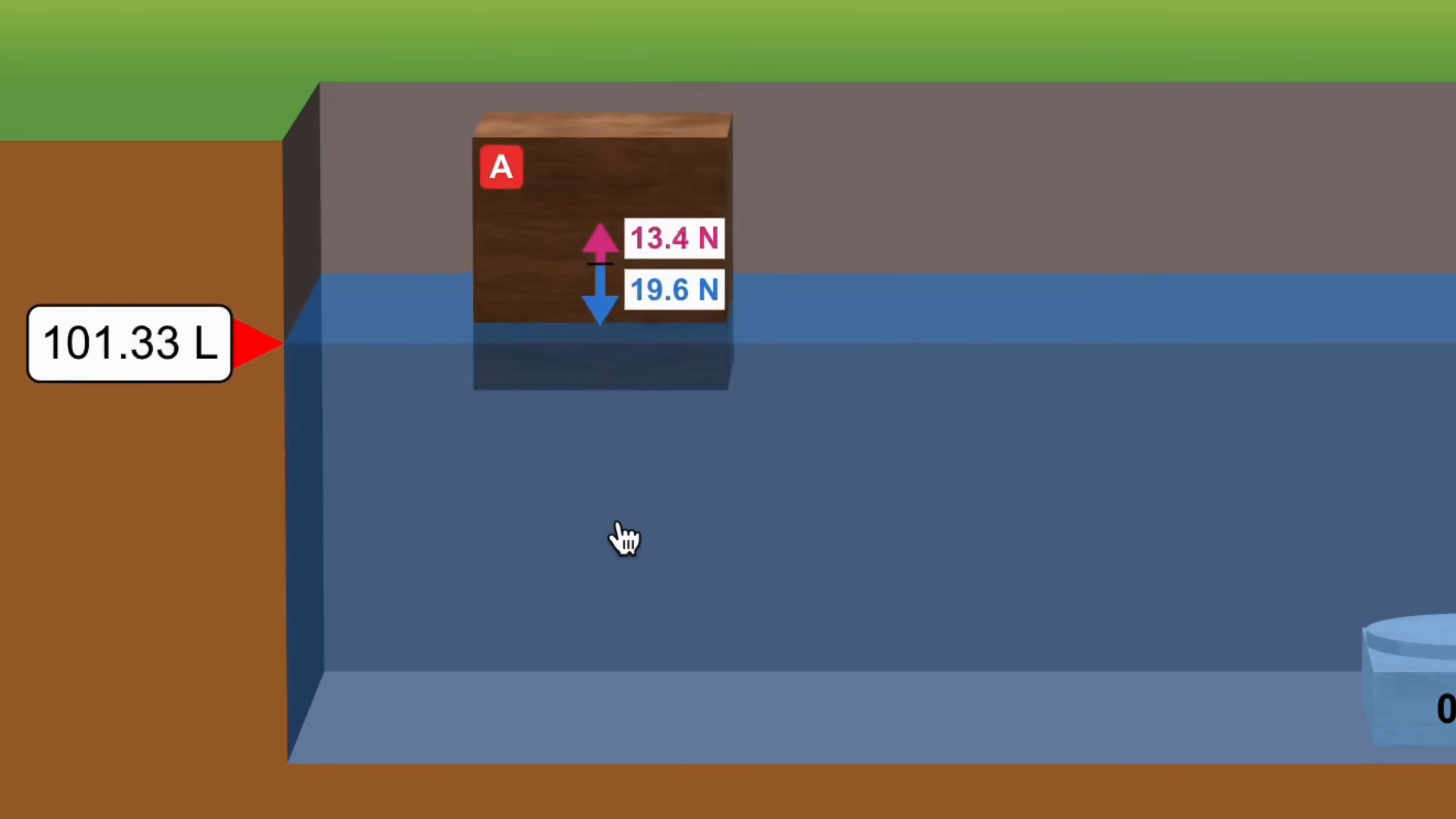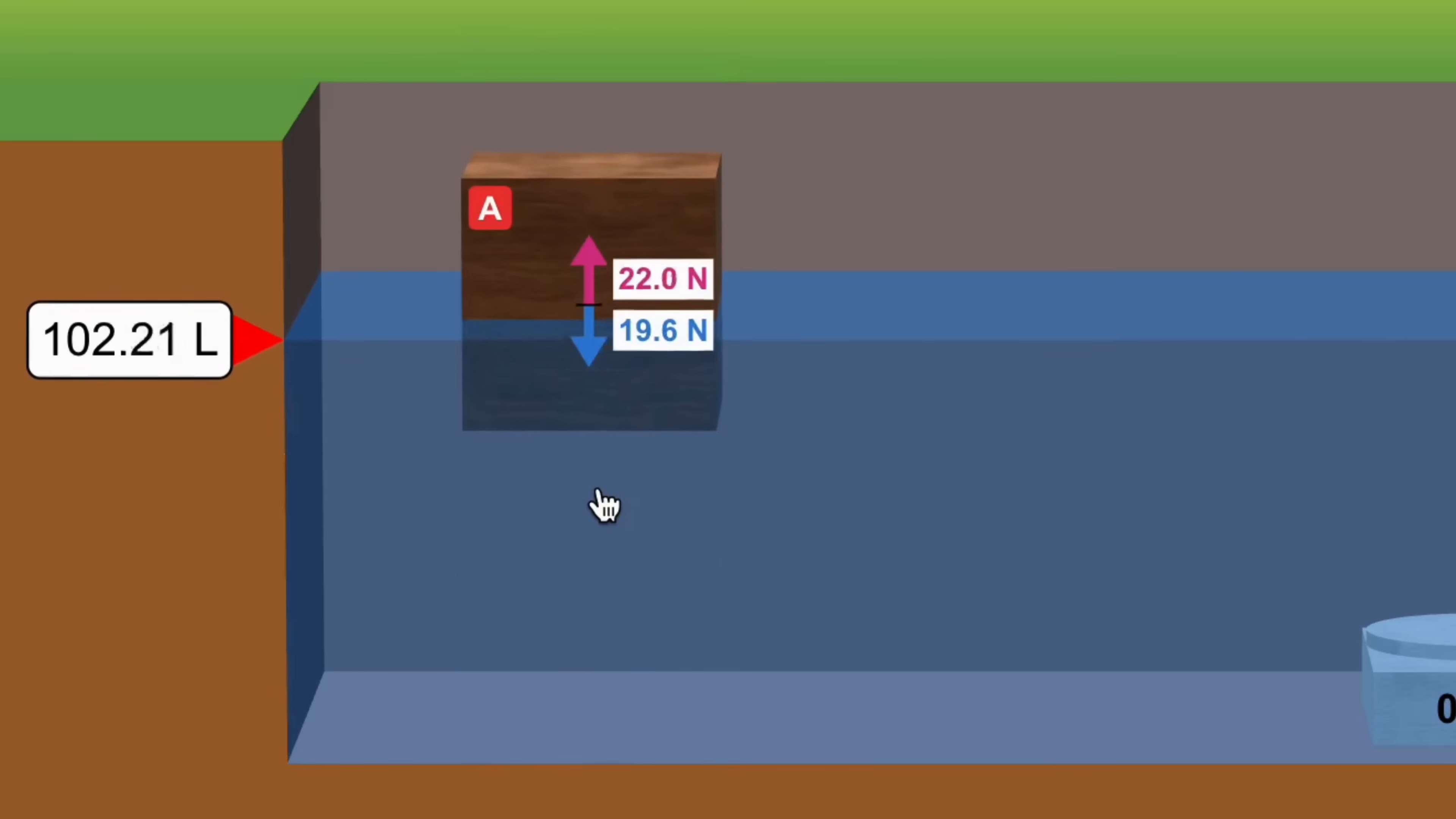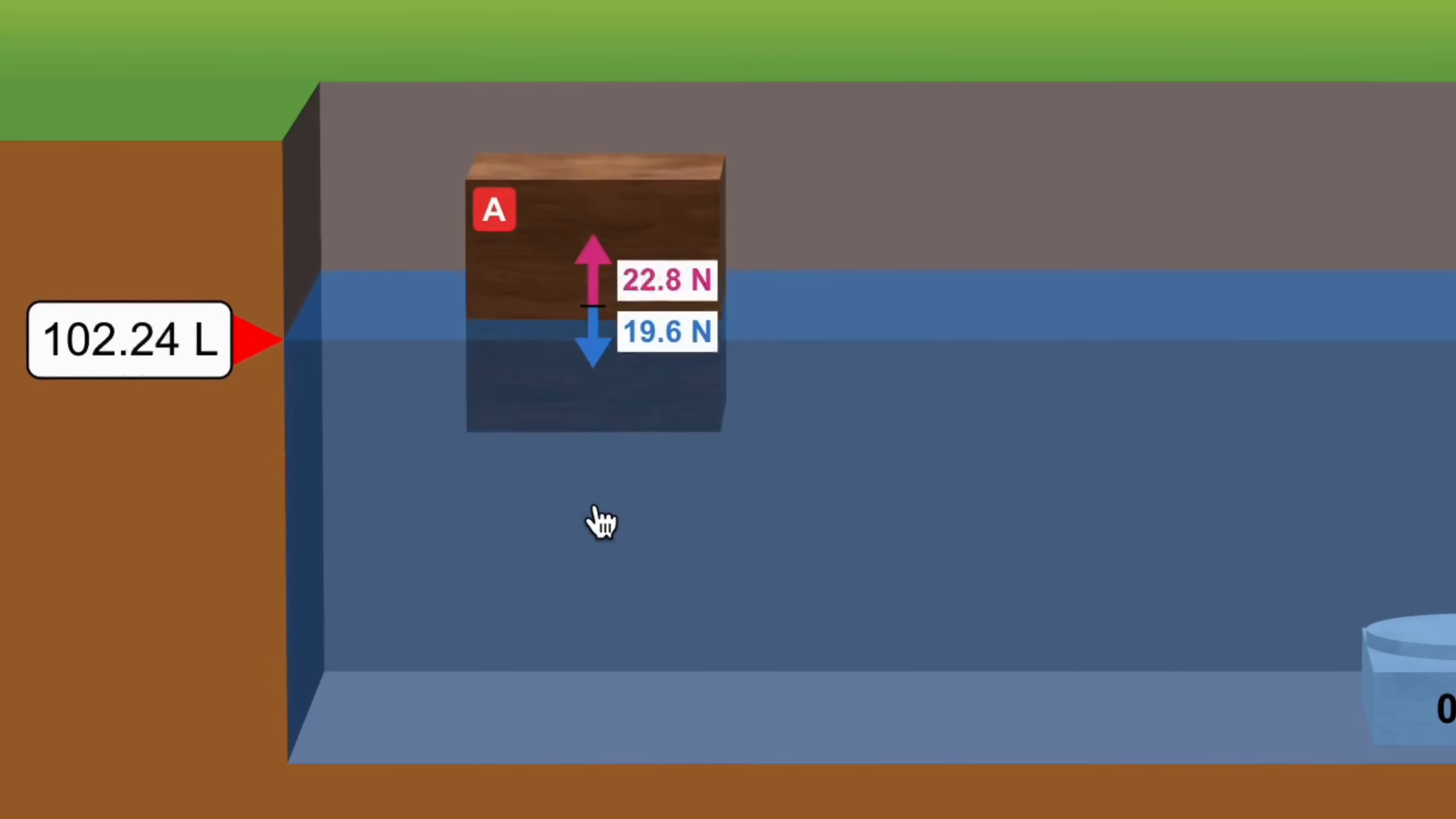Now the Archimedes' principle explains the magnitude of this buoyant force. It states that when a body is wholly or partially immersed in a fluid, it experiences an upward buoyant force equal to the weight of the fluid displaced by the body.